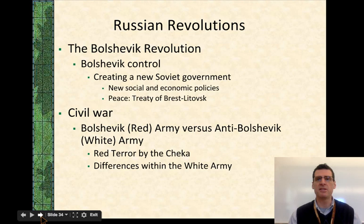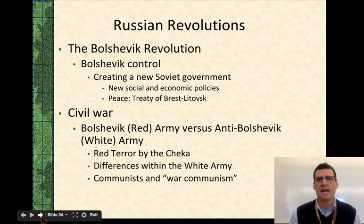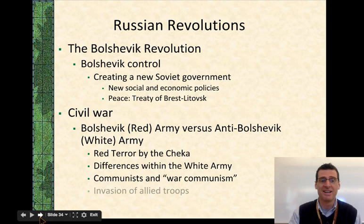The problem with the White Army is that they're not unified — they don't have one cause. Some want the Tsar to come back, some want a Western-style socialist government. They can't agree on anything other than not wanting the Bolsheviks, which is not a good way to run things. The communists are unified and institute war communism: a seemingly contradictory idea where they must first centralize the government and take control of everything in order to eventually decentralize power to the Soviets — confusing, but it ends up working.